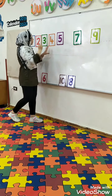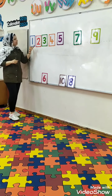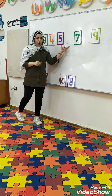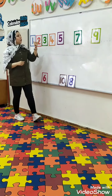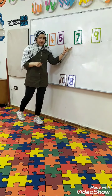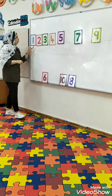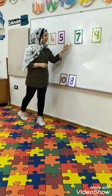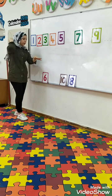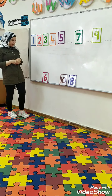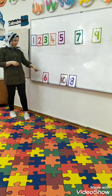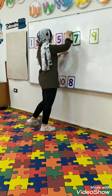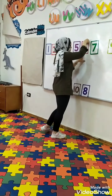Let's try it one more time. 1, 2, 3, 4, 5. Uh-oh. What comes after number 5? Let's count to know. 1, 2, 3, 4, 5, 6. Super. Which one is number 6? This one? No. This one? Yes. Okay, I will stick it here.